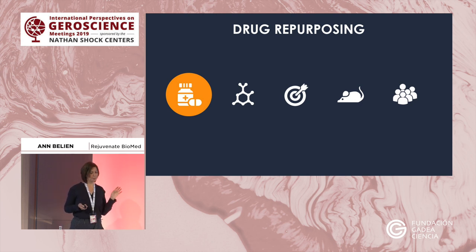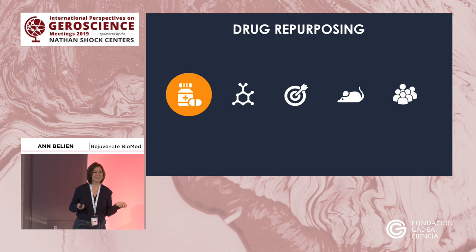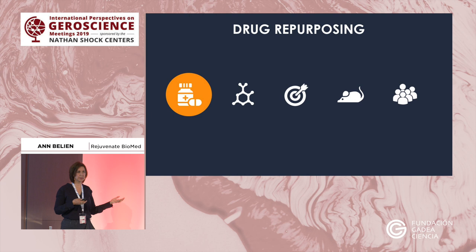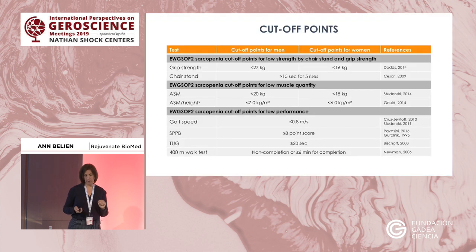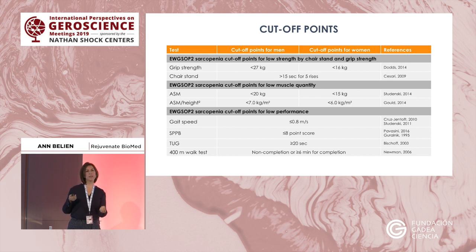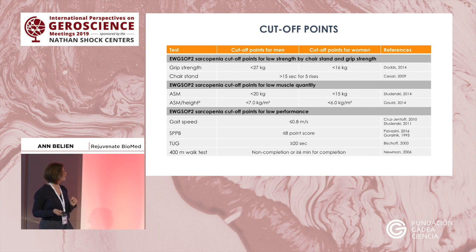Drug repurposing has pros and cons. One element — the elephant in the room — is IP. If you cannot have IP on a combination or product, there is not one investor in the world who will put money into your company. So the way we select compounds is also related to that: we look at freedom to operate, and whether there is something specific and new to the combination that allows for patentability. That's what we did for this compound as well.